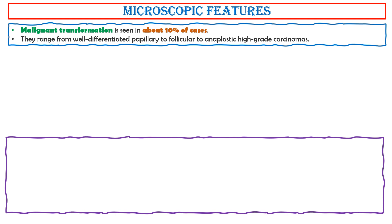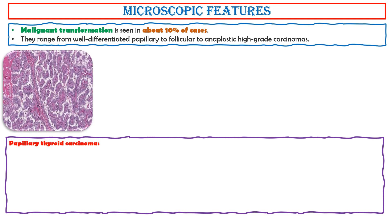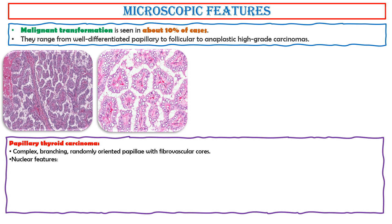Malignant transformation is seen in about 10% of cases. They range from well-differentiated papillary to follicular to anaplastic high-grade carcinomas. This photo shows complex branching, randomly-oriented papillae with fibrovascular cores. Nuclear features include changes of nuclear size and shape, including nuclear enlargement, elongation, and overlapping.